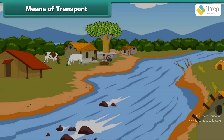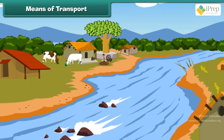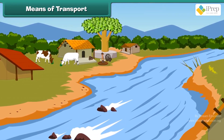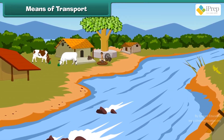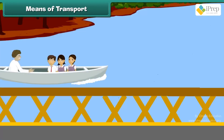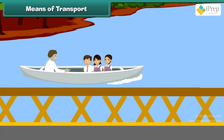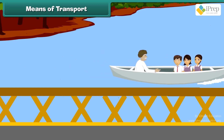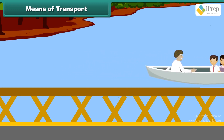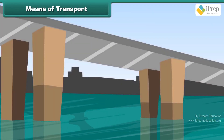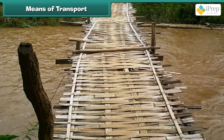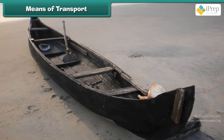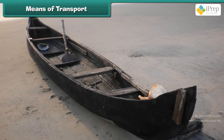In places where children have to cross a river or water body to reach school, they use boats. For small streams of water, a bridge is there to cross it. A bridge can be made of cement and sand or can be made out of bamboo. In Kerala, wallam is used, which is a kind of boat.